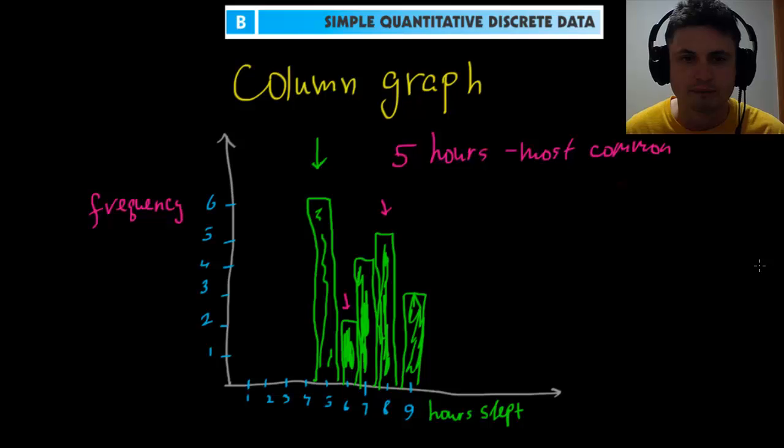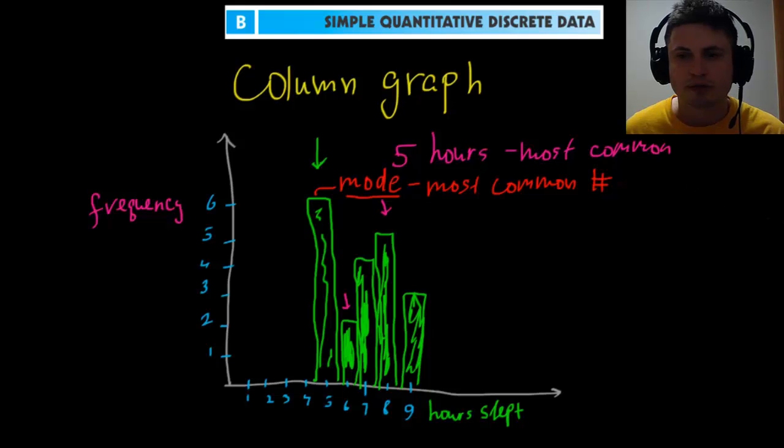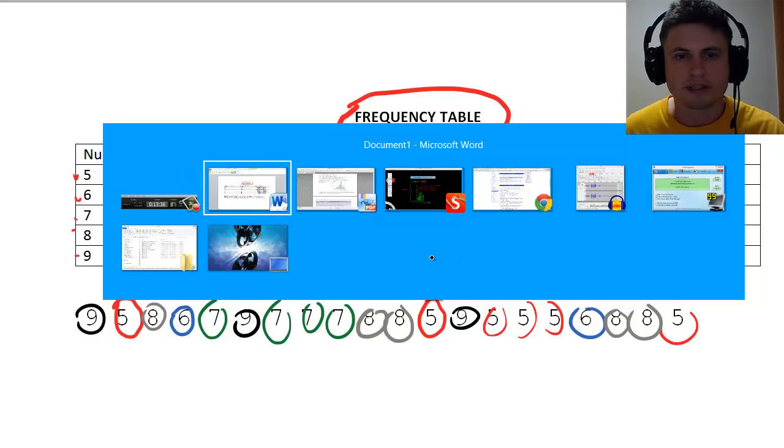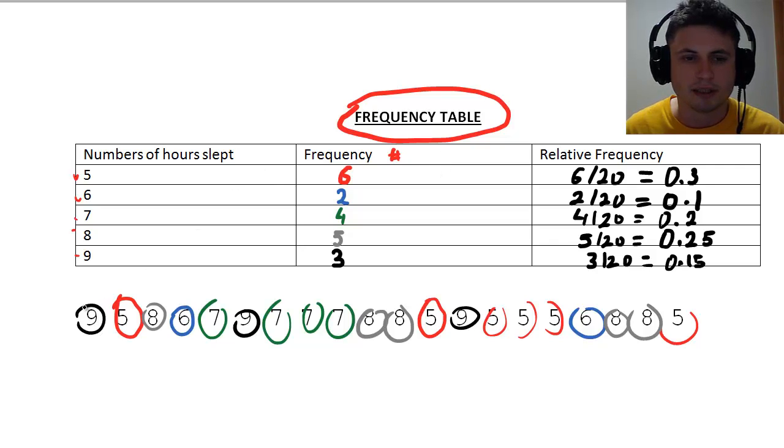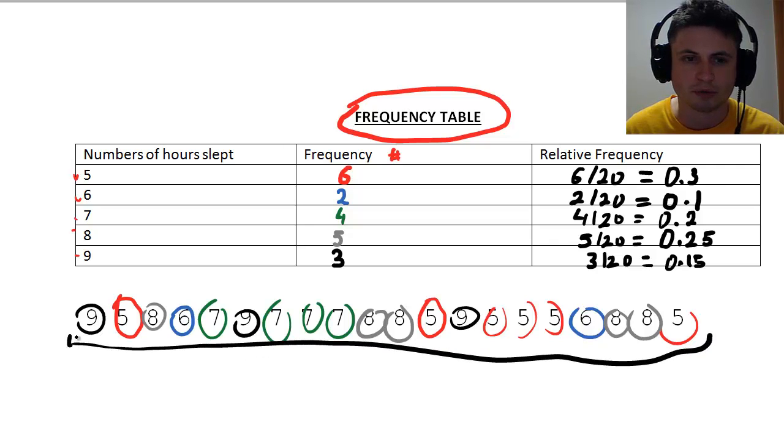If you remember your grade nine algebra, the most common number is actually called mode. Mode is the most common number in statistics. The other words you have to remember - there's also something called mean, and mean is the average. In this case to find the average, you have to go back to our table, look at all of these numbers on the bottom, add them all up and divide them by 20, which is our number of measurements. This will give us the average or the mean.